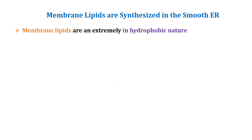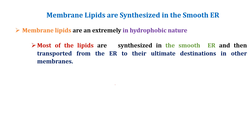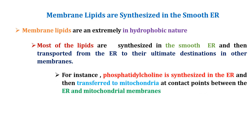Apart from the rough ER, the smooth ER is the major site at which membrane lipids are synthesized in eukaryotic cells. Lipids are extremely hydrophobic in nature, and membrane lipids are synthesized in association with the existing cellular membrane rather than the aqueous environment of the cytosol. Most lipids are synthesized in the ER, then transferred to their ultimate destination in other membranes. For example, phosphatidylcholine is synthesized in the ER and transferred to the mitochondria at contact points between the ER and mitochondrial membranes.